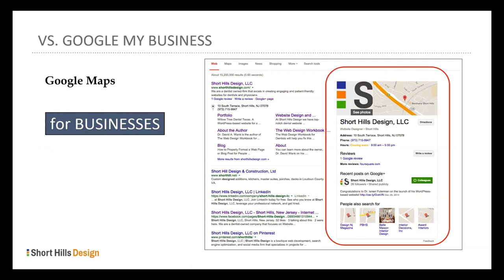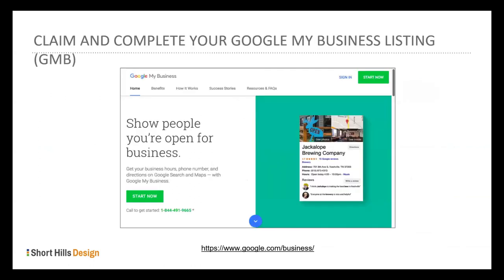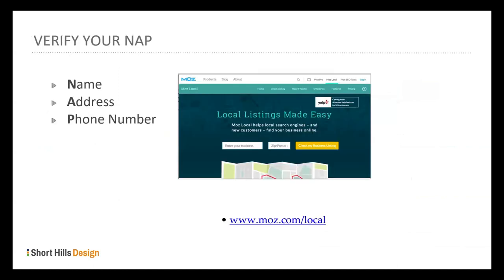Filling out your Google My Business listing is a ranking factor. If you and a competitor are both up to par, and your listing is 100% filled and theirs isn't, it may make a difference. Similarly, NAP — your name, address, phone number — Google wants these consistent across the internet. If you're listed as Dr. David Wank in some places and Dr. David A. Wank DMD in others, they want consistency across the web, because doing so will make your Maps listing better.